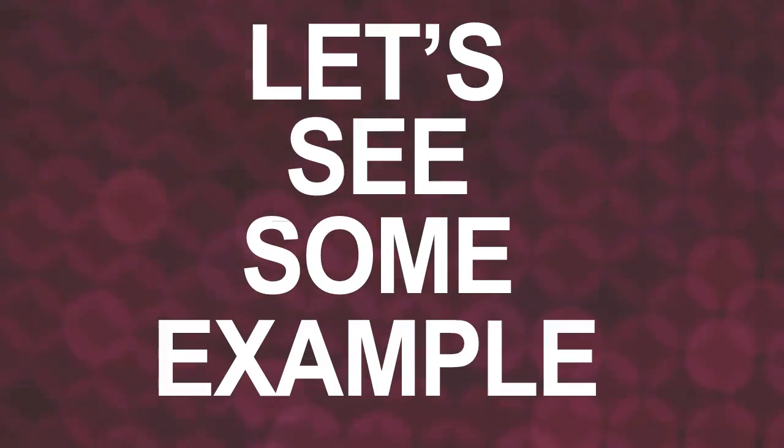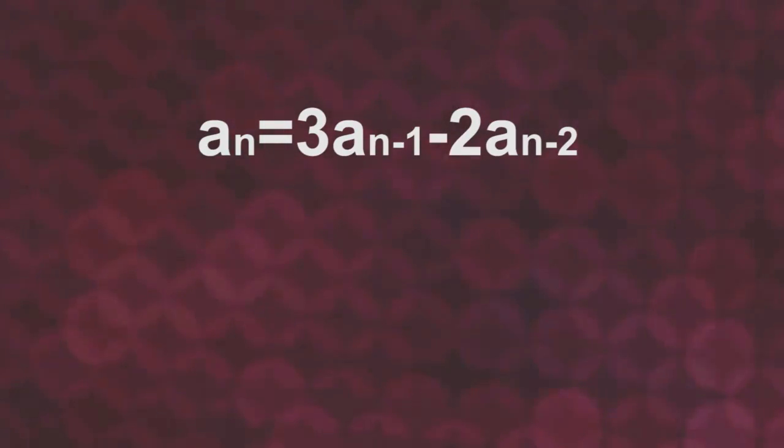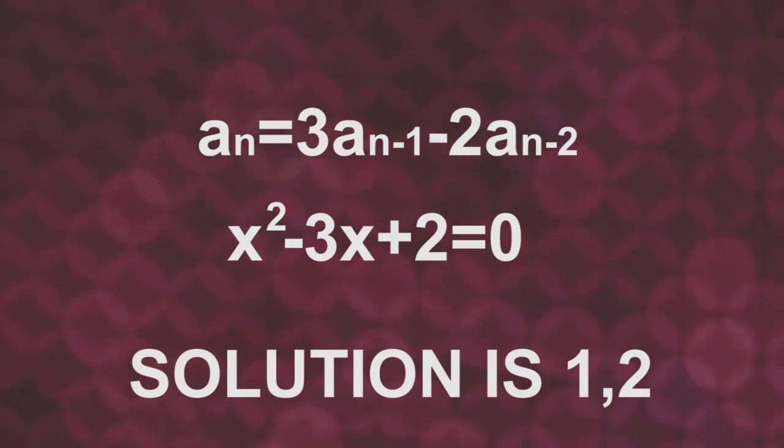And the solution of this characteristic equation is called particular solution. Also, for the case that you have not understood, let's see some example. If homogeneous linear recurrence formula is given like this, characteristic equation becomes this, and the particular solution will be obviously one or two.